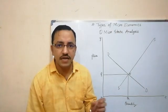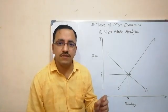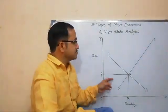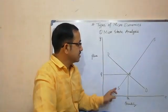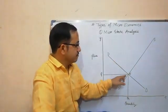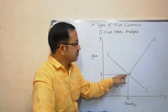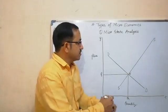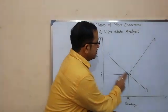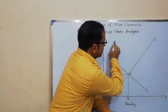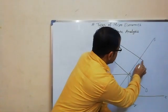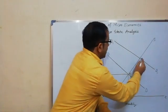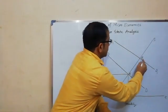It only makes a comparative study between the two equilibrium positions. In the graph, the initial demand curve is DD, the initial supply curve is SS, and their intersection is point E, our initial equilibrium point. Suppose the demand curve DD shifts upward to the right in the form of D1D1; the new equilibrium point will then be E1.